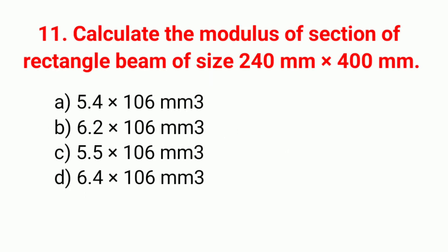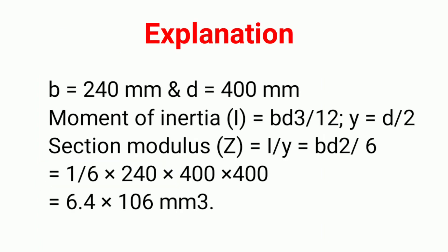Question 11: Calculate the modulus of section of a rectangular beam of size 240 mm × 400 mm. The correct answer is option D, 6.4 × 10⁶ mm³. Explanation: B = 240 mm, D = 400 mm. Moment of inertia I = BD³/12, and Y = D/2. Section modulus Z = I/Y = BD²/6. Substituting the values gives Z = 6.4 × 10⁶ mm³.